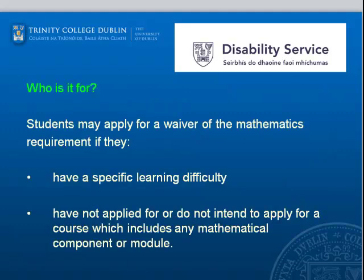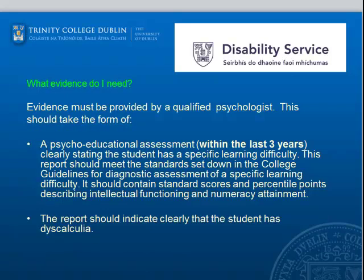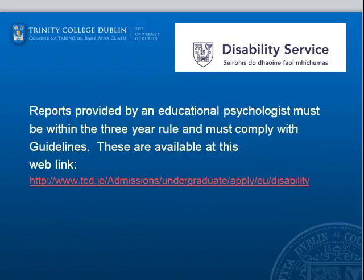Students may apply for a waiver of the Maths requirement if they have a specific learning difficulty and have not applied for, or do not intend to apply for, a course which includes any mathematical component. Evidence must be provided by a qualified psychologist — an assessment dated within the last three years clearly stating the student has a specific learning difficulty, including dyscalculia. This report should meet the standards set down in the college guidelines, and reports provided by an educational psychologist must comply with the three-year rule and college guidelines.